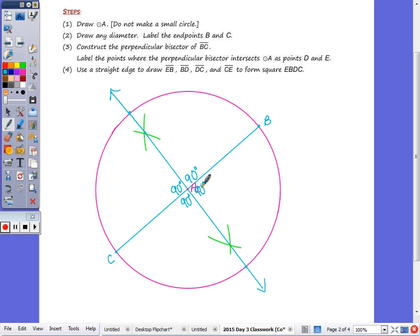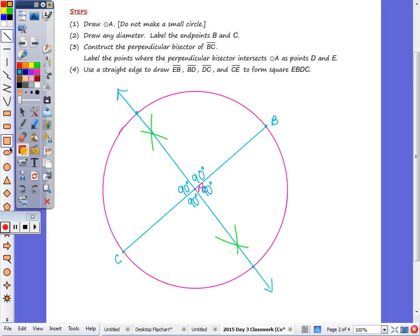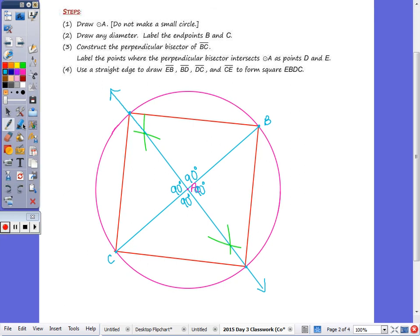So the arcs are 90 degrees. Take your segment tool, or your straight edge now, and connect the four points on your circle. Label them D and E. So I'll call this one E. So E, B, D, C was my square.